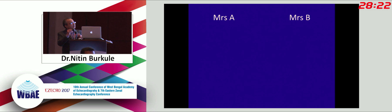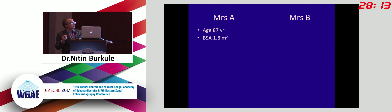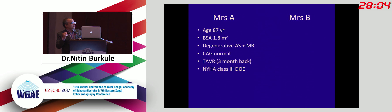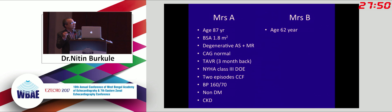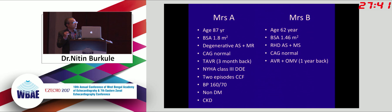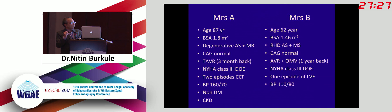I am putting two cases — two elderly ladies, Mrs. A and Mrs. B. Mrs. A is 87 years old, body surface area 1.8, with degenerative AS and MR, normal CT angio, underwent TAVR three months back, still NYHA class III after spending 20 lakh rupees, two episodes of CCS, BP 160/70, non-diabetic, and has CKD. Mrs. B is 62 years old, BSA 1.4, known rheumatic aortic stenosis and mitral stenosis, normal angio, underwent AVR and open mitral valvotomy one year back in a government setting, has a metallic prosthetic valve, NYHA class III with dyspnea on exertion, one episode of LVF/pulmonary edema, BP 110, non-diabetic, no CKD.